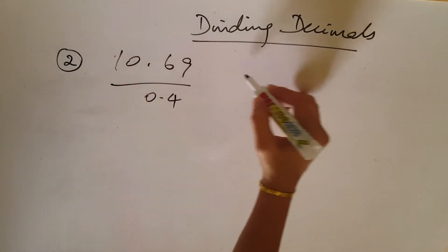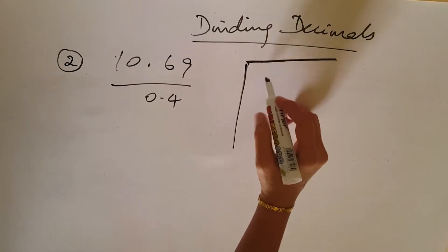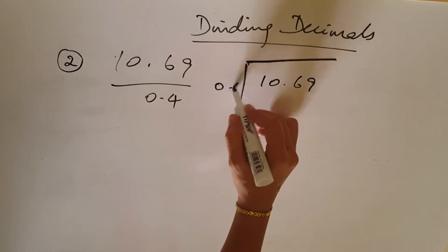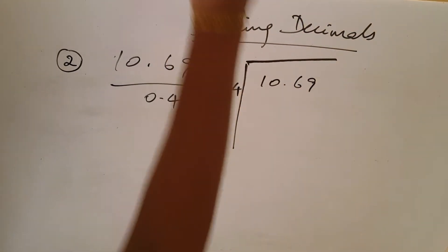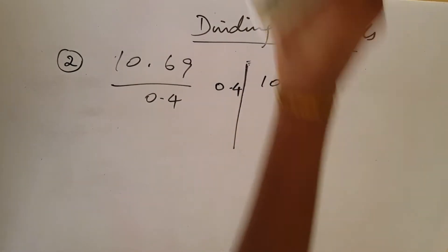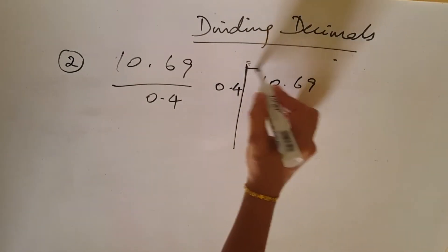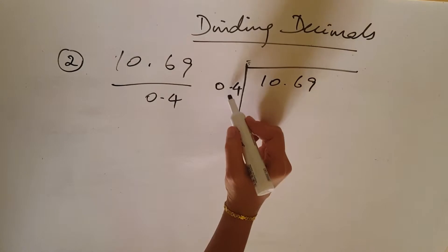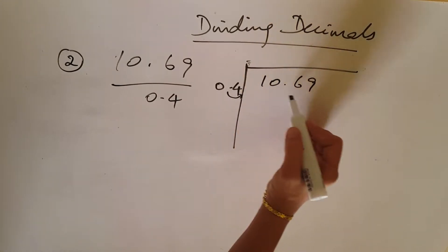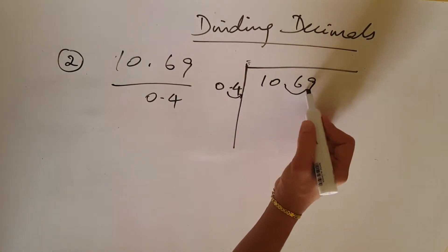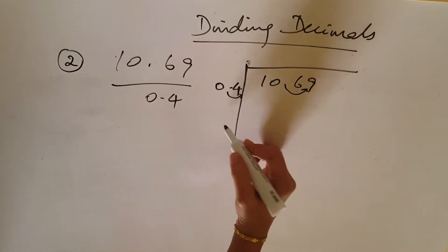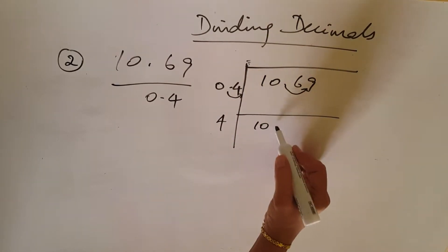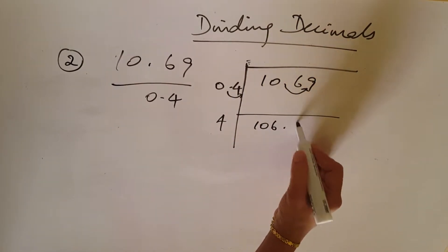Now we will see the long division method for 10.69 divided by 0.4. We move the decimal one place, converting to 106.9 divided by 4.